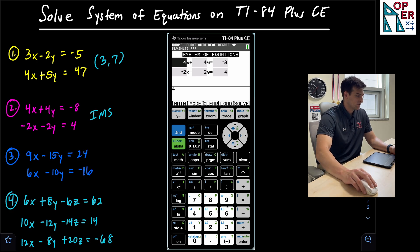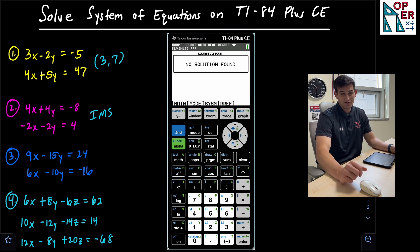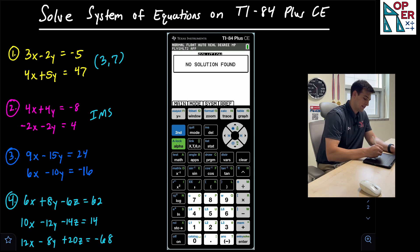So this is 9X minus 15Y is equal to 24 and 6X minus 10Y is equal to negative 16. So now we have it set up. We hit solve and the calculator says no solution found. So in that case, we know there is no solution.